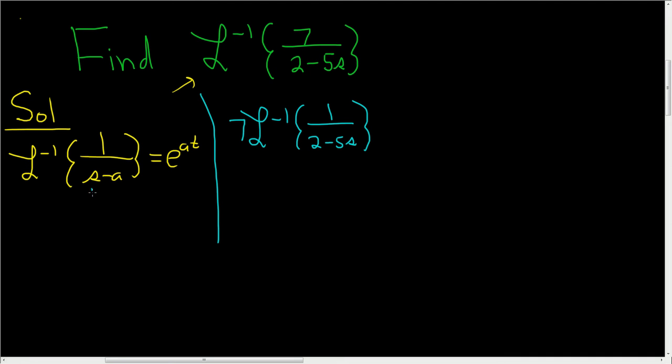You'll notice that in the formula the s is over here, and it's positive here. It's negative. So I'm going to pull out a negative 1 from the denominator, and I'll put it outside. So this is negative 7 inverse Laplace of 1 over 5s minus 2. The sign switches in the denominator. You can check this. Negative 1 times 5s is negative 5s. Negative 1 times negative 2 is positive 2.